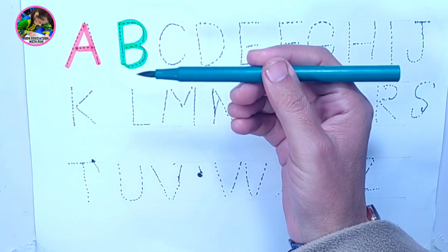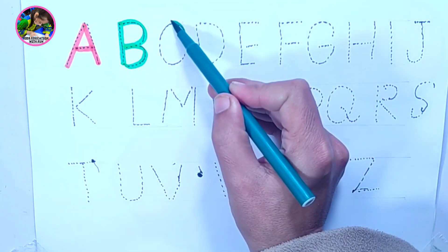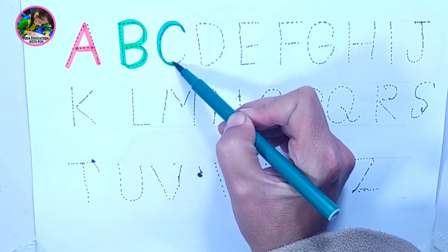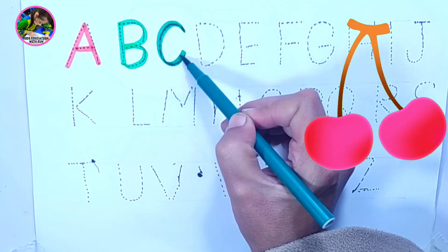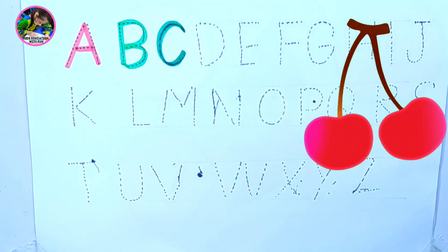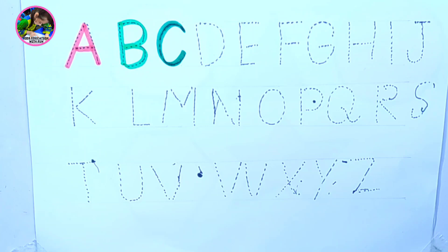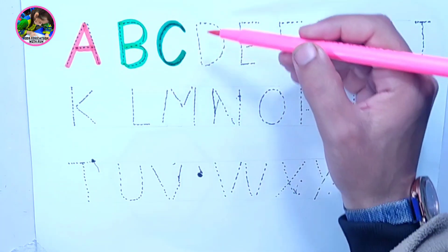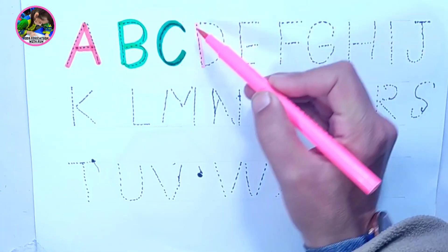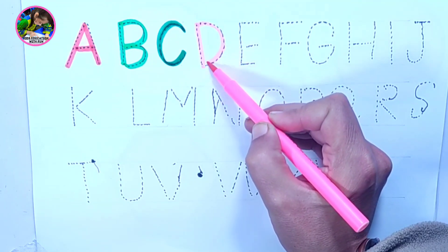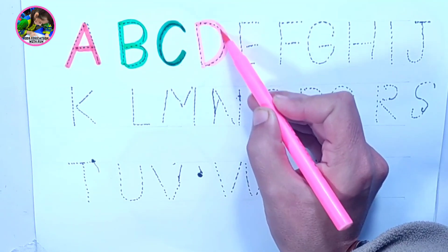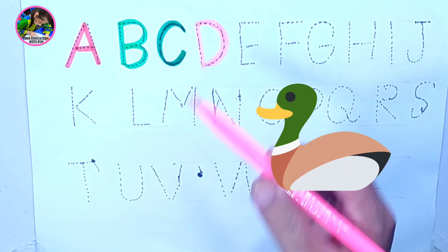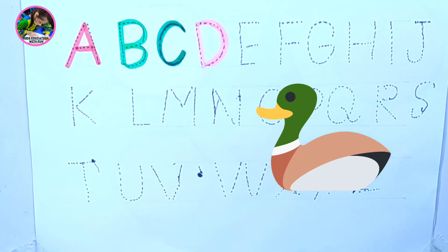Dark green color — letter C. C is for Cherry. Pink color — letter D. D is for Duck.